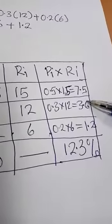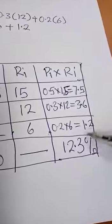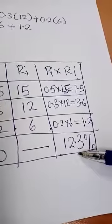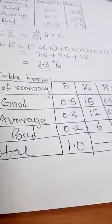So when you add 7.5 plus 3.6 plus 1.2, you should have 12.3. Therefore, your answer as it is above is 12.3%. Thank you very much.